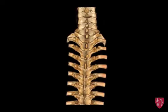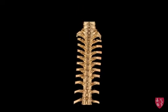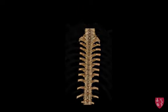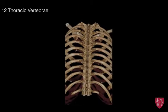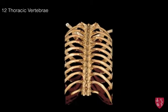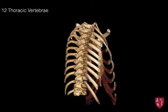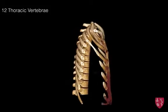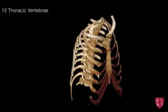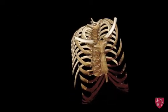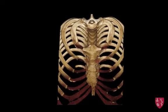Next, we will move more inferiorly to investigate the 12 thoracic vertebra. The thoracic vertebra serve as attachment sites for the ribs posteriorly, while anteriorly the ribs attach to the sternum and the manubrium.